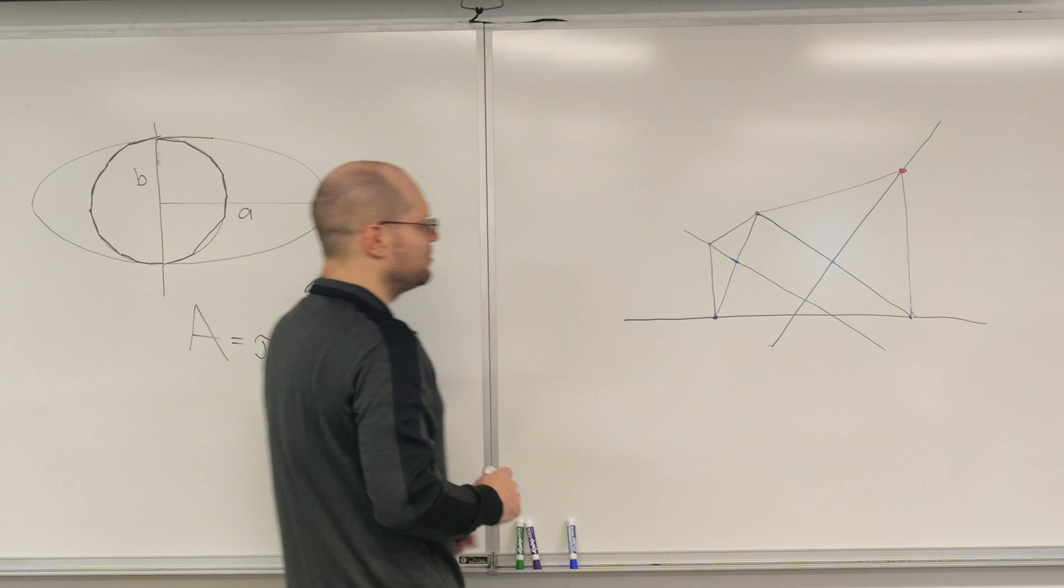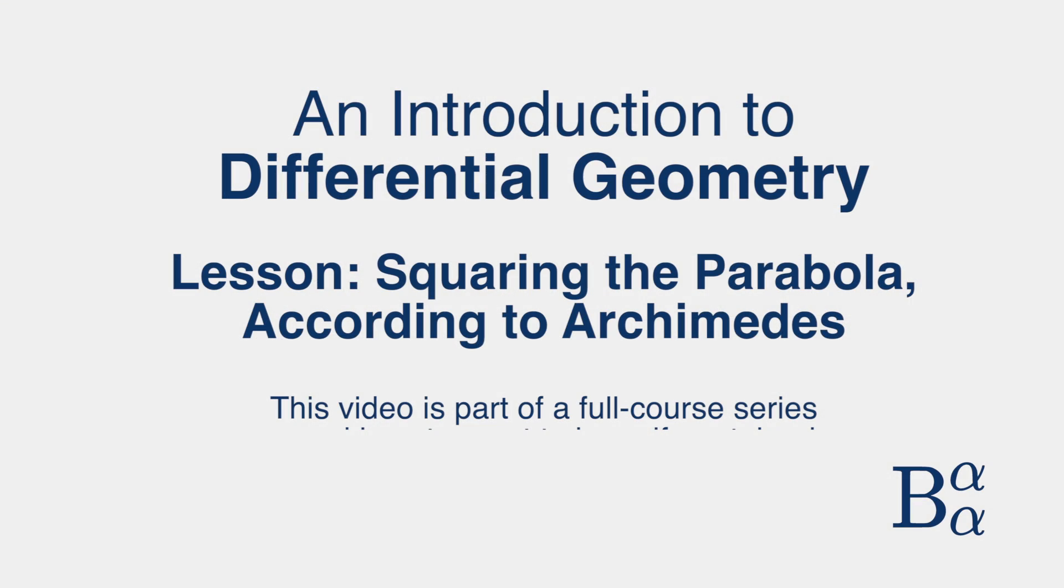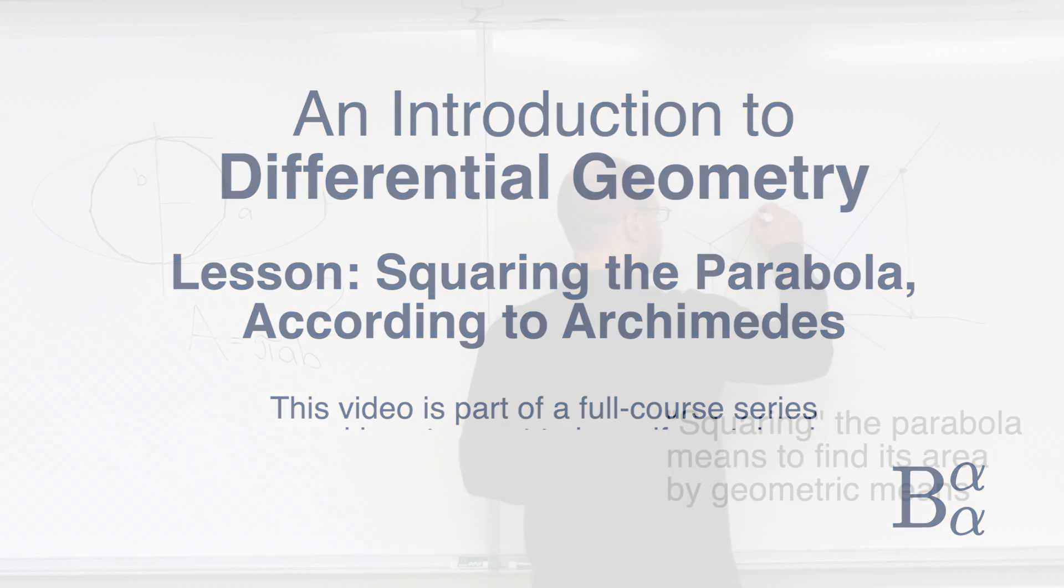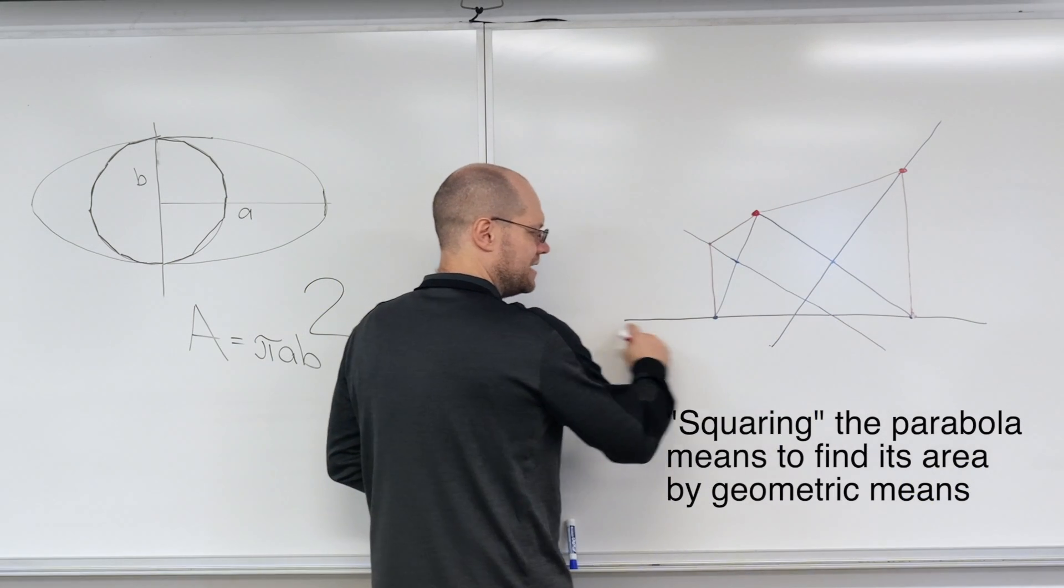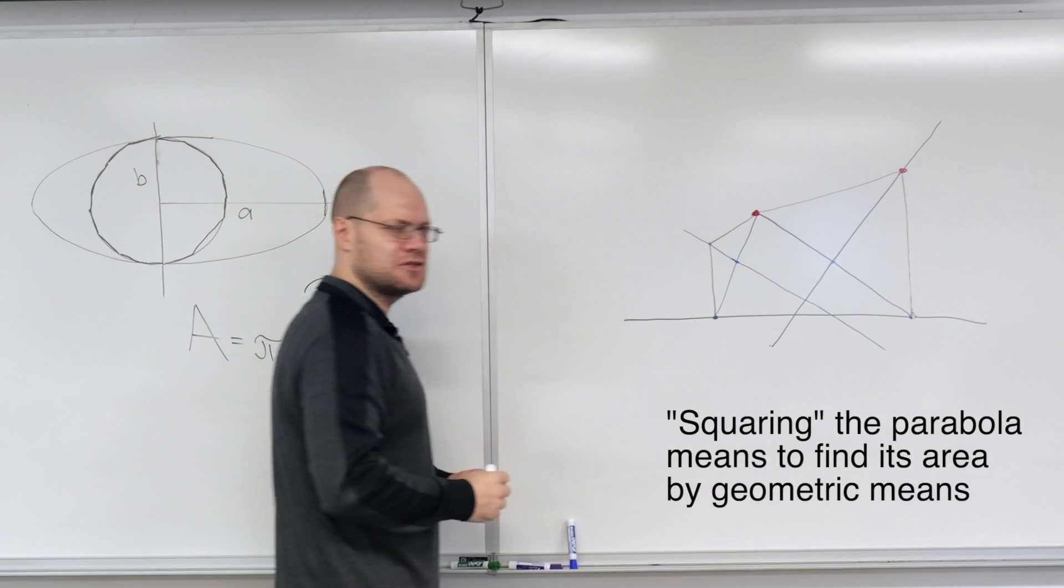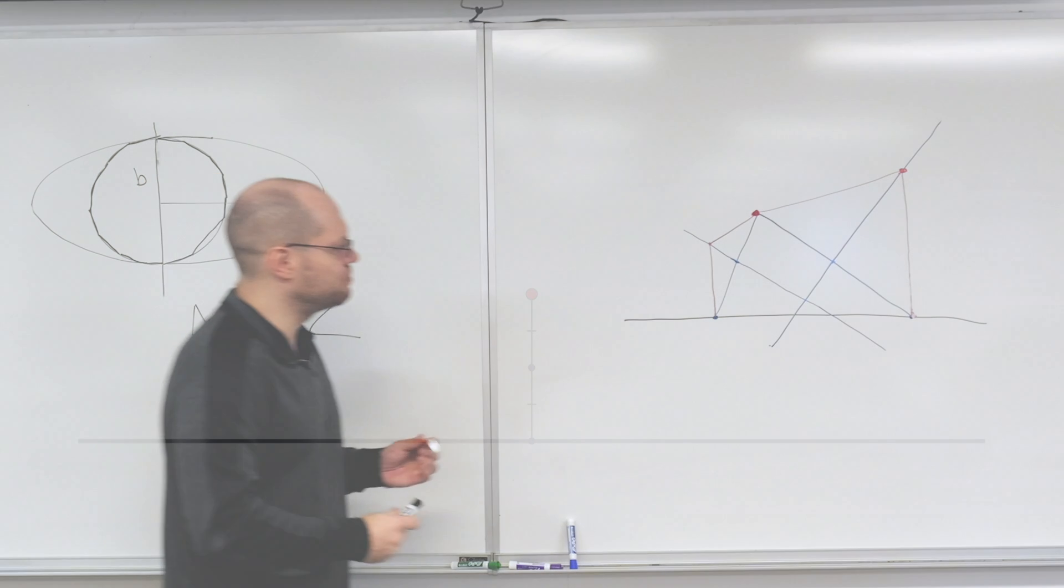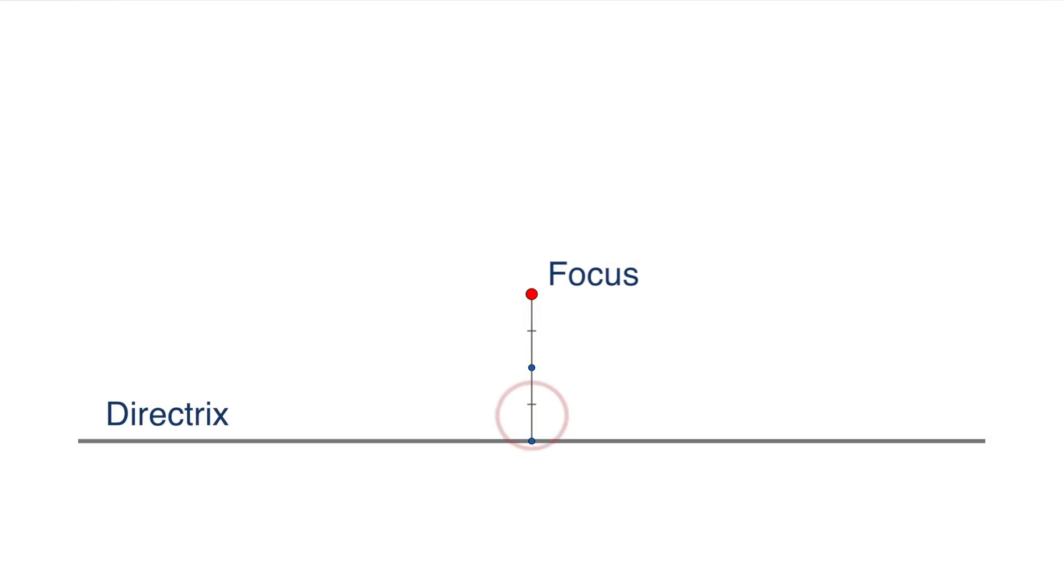Now let's spend a little bit more time with Archimedes. Here's my directrix, and I'm just going to find a few points on the parabola. So one of them is exactly halfway between the focus and the directrix, so right around here.